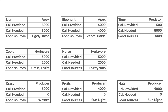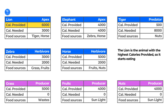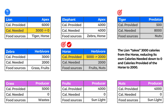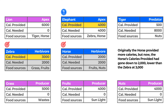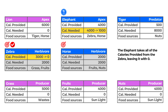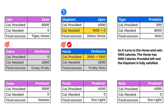I'll run through a sample food chain so we can see all the rules come to life. The lion has the highest calories provided, so it starts eating. It has two food sources — tiger and horse. Between these two, the horse has the higher calories provided, so the lion picks the horse. The lion takes 3,000 calories from the horse, reducing its own calories needed to zero and the horse's calories provided to 2,000. Then the elephant has the next highest current calories provided, so it eats. Like the lion, the elephant has both the horse and zebra as food sources. Originally the horse provided more calories, but now the horse's calories provided had gone down to 2,000, lower than the zebra at 3,000. So the elephant picks the zebra instead, taking all of the zebra's calories, leaving it with zero. However, the elephant still needs 1,000 calories more, so it turns to the horse and eats 1,000 calories.